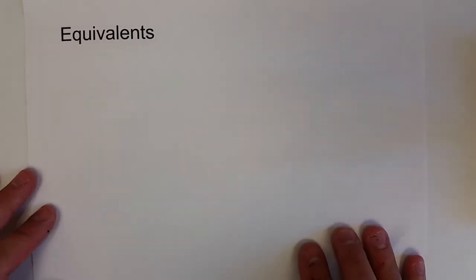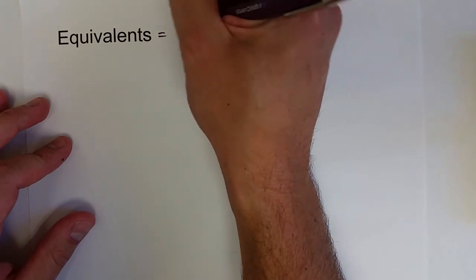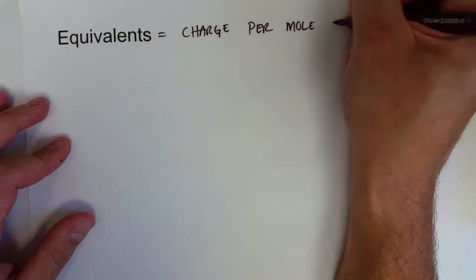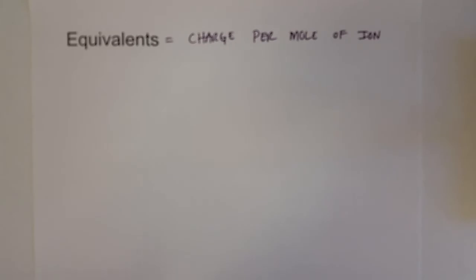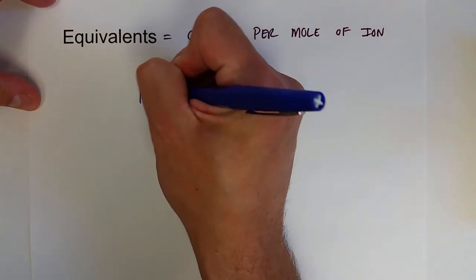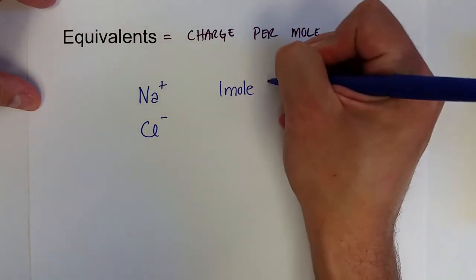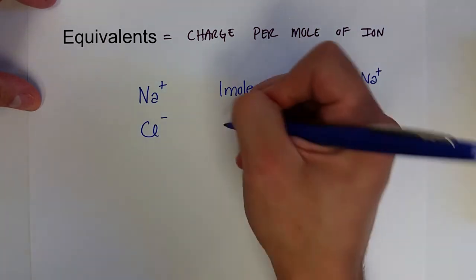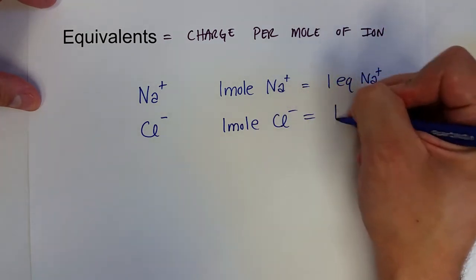Equivalence is equal to the charge per mole of ion. So for ions that have a single charge, like sodium is plus one, or chloride, which is minus one, one mole of sodium is equal to one equivalent eq of sodium. And the same goes for chloride. One mole of chloride is equal to one equivalent of chloride.